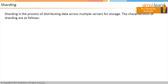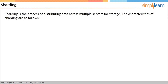Sharding is the process of distributing data across multiple servers for storage. MongoDB uses sharding to manage massive data growth. With an increase in data size, a single machine may not be able to store data or provide an acceptable read and write throughput. Sharding supports horizontal scaling and is capable of distributing data across multiple machines.